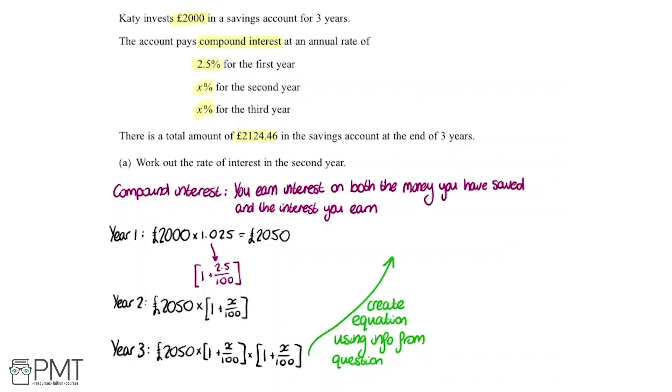I'm going to write out an equation using that. So we're going to say our 2050 multiplied by 1 plus x over 100, multiplied again by 1 plus x over 100, equals what we're told in the question, so 2,124.46.